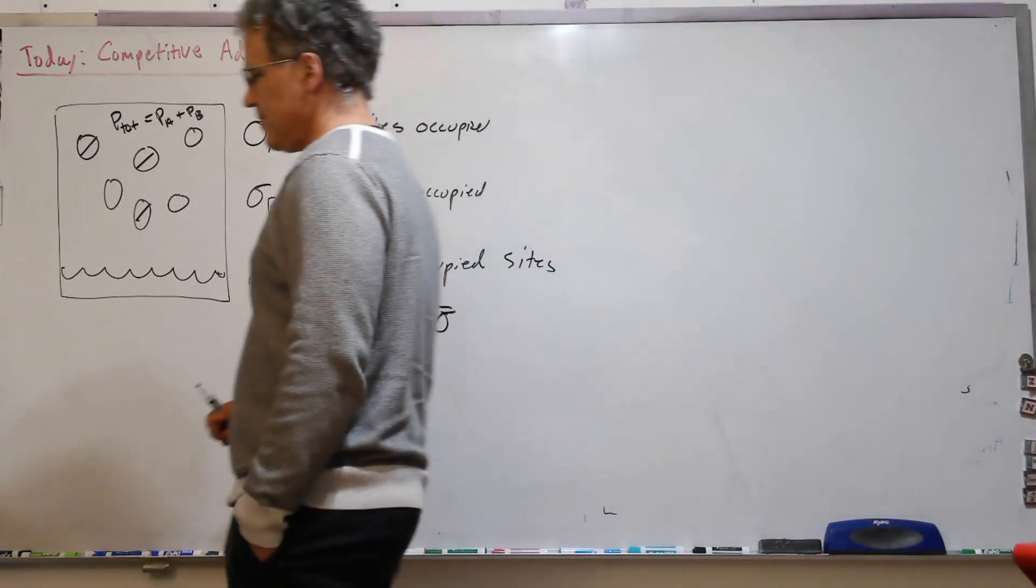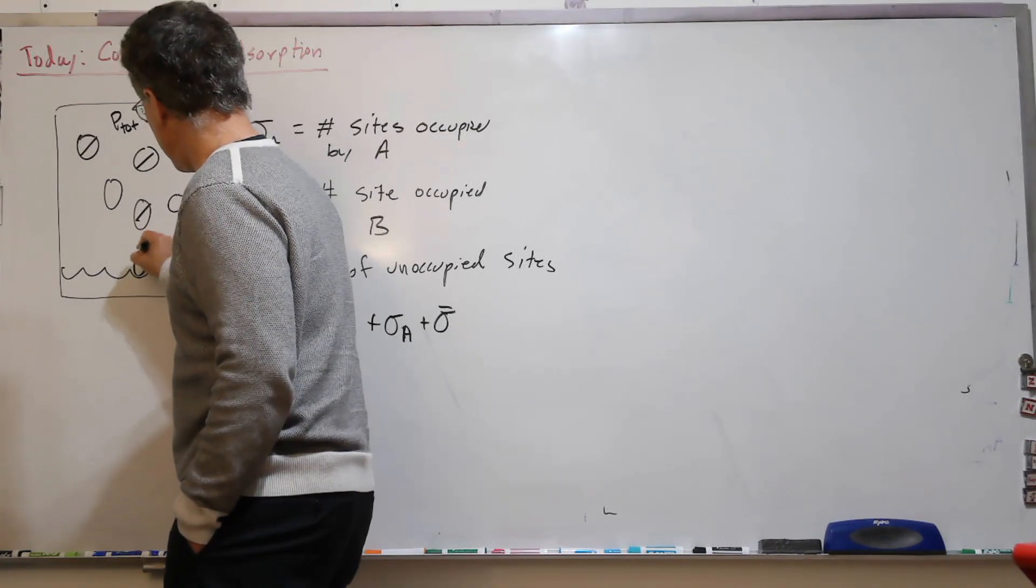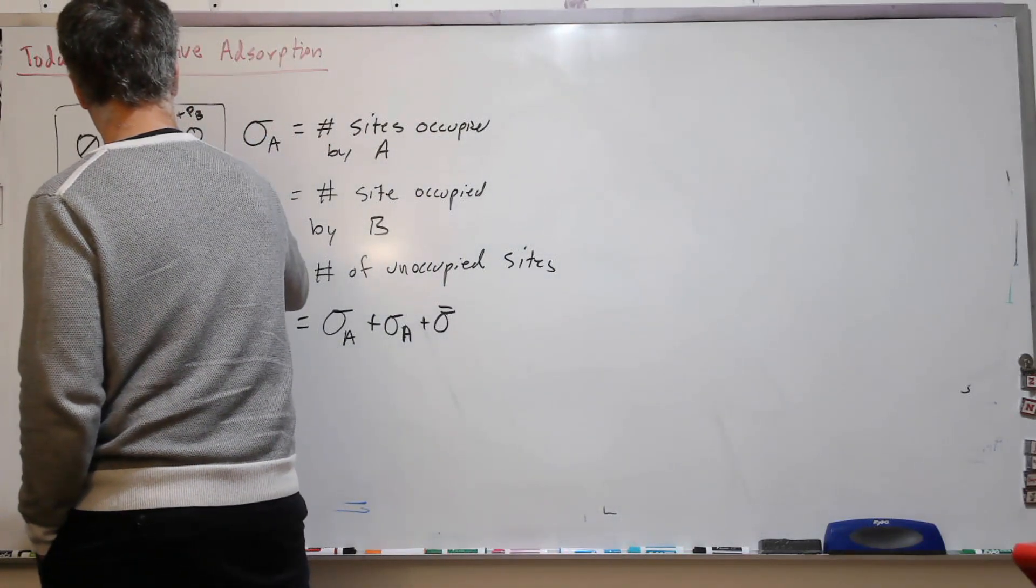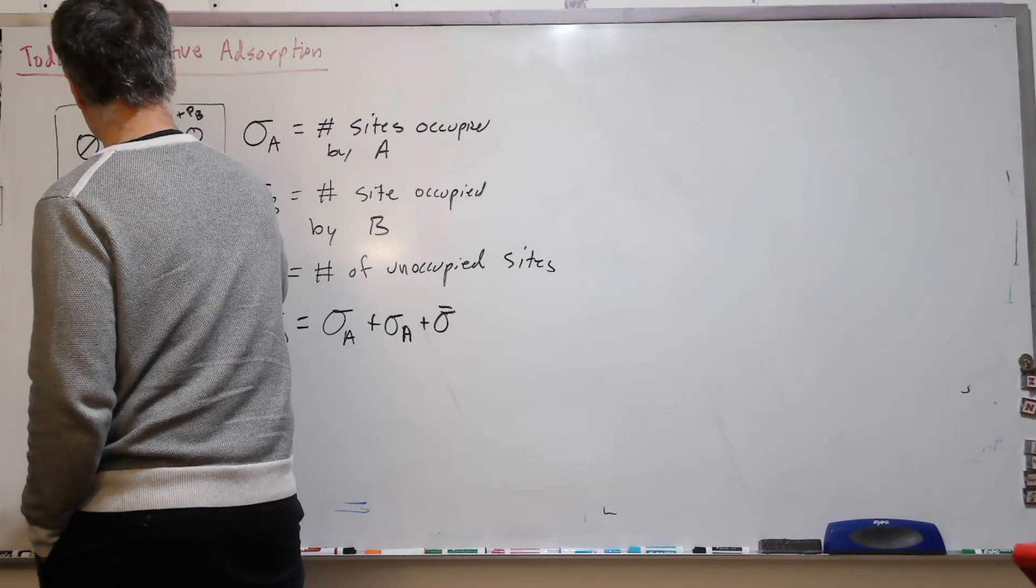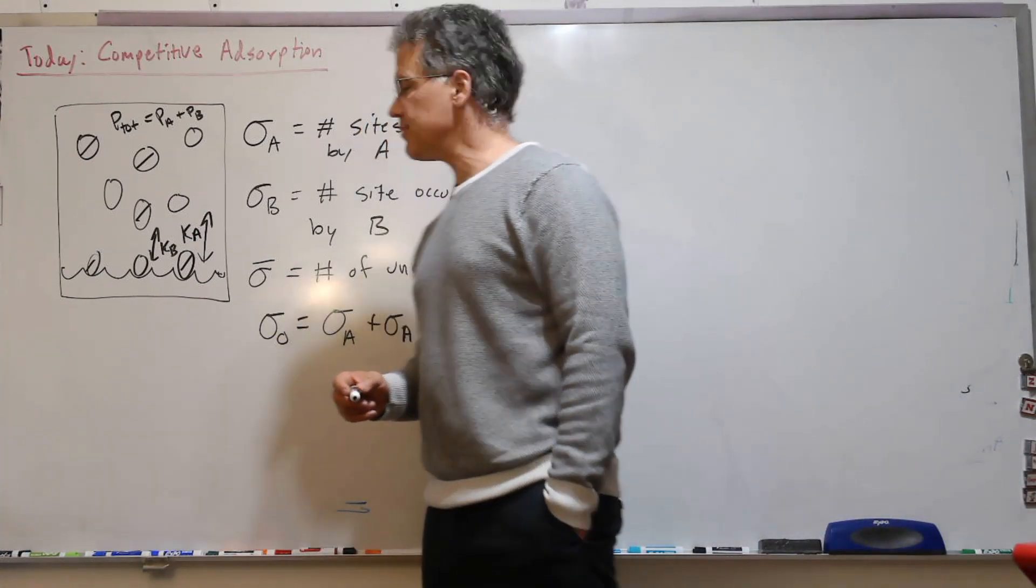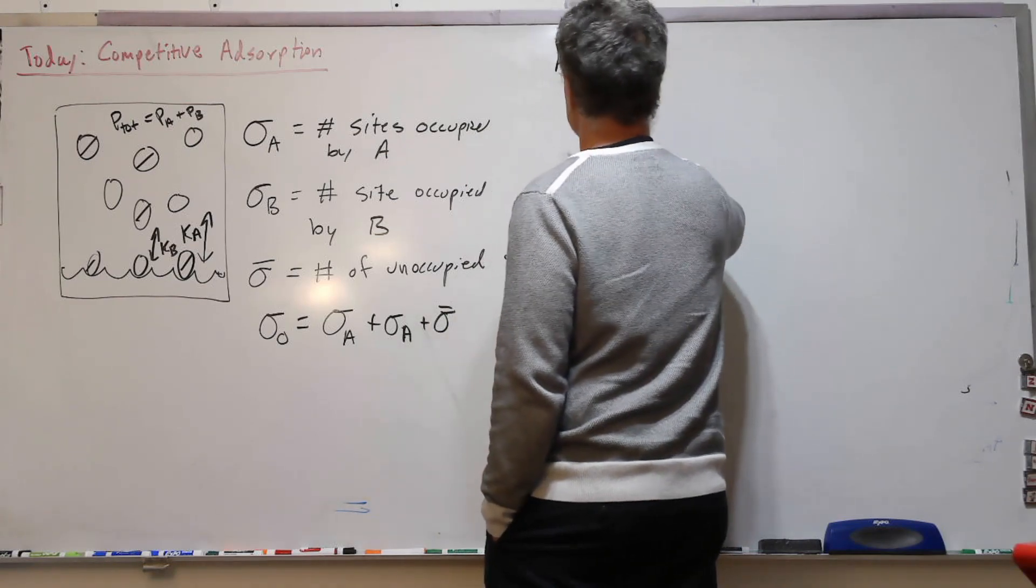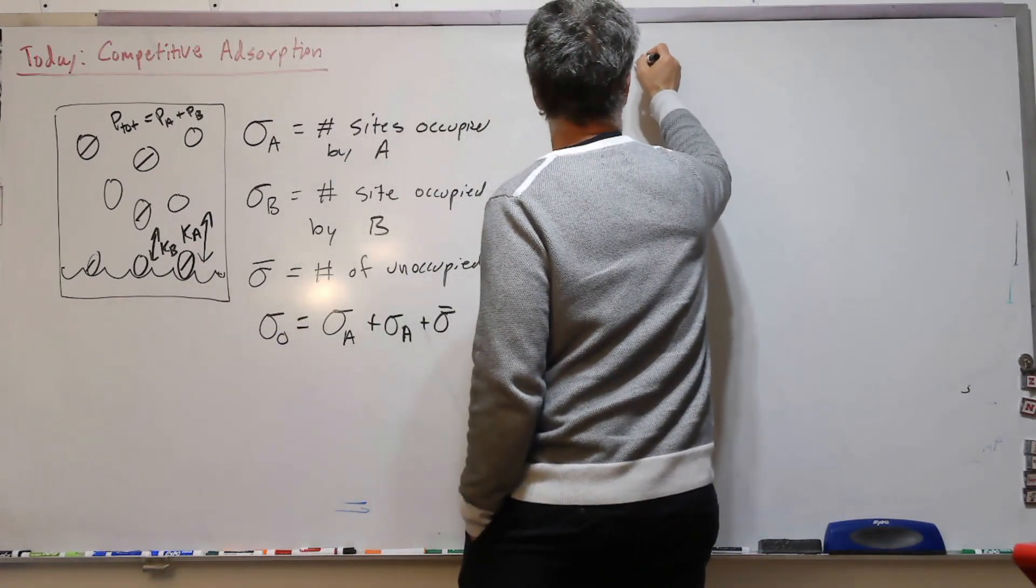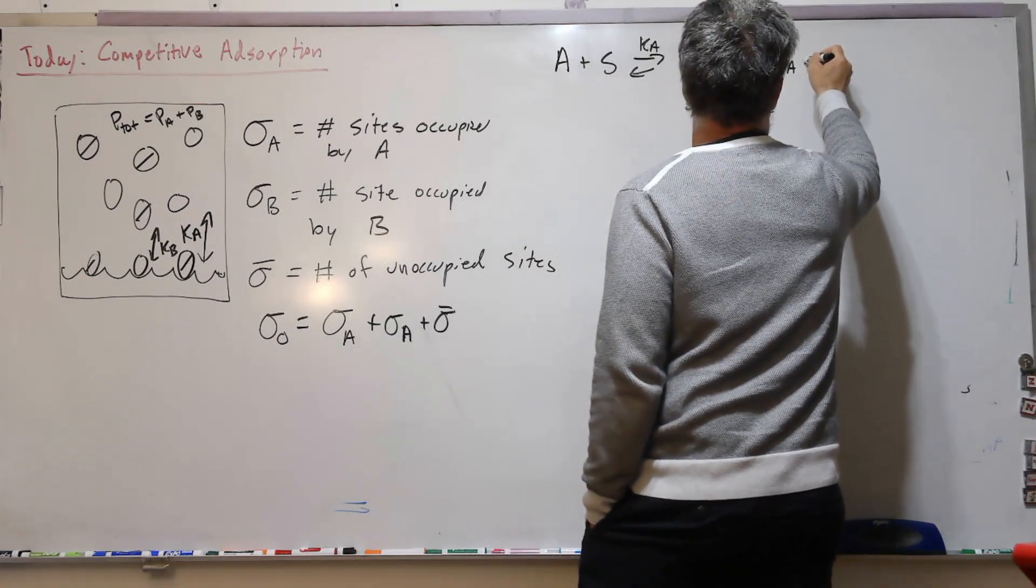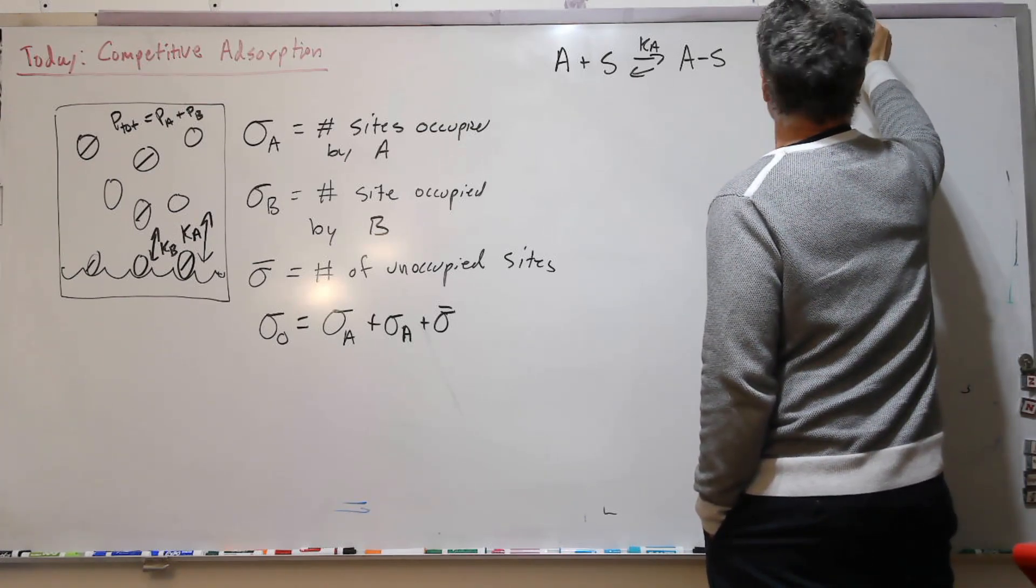So now we want to see what's happening here. We get binding of one type or another. We have an equilibrium situation for each independently, so like K_A and K_B. So we can write a separate reaction for each: A plus S, I guess, for a site.